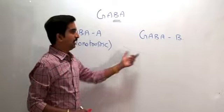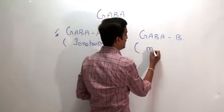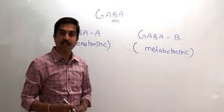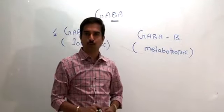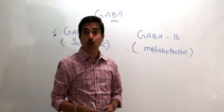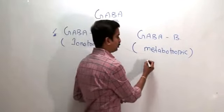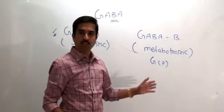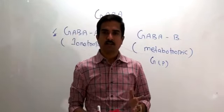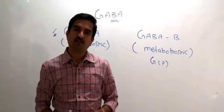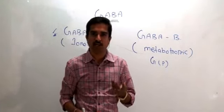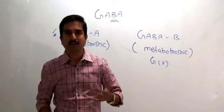Meanwhile, the GABA-B receptors are called metabotropic receptors, also known as G-protein coupled receptors. These are not connected with chloride channel opening. Instead, metabotropic receptors perform their biological action mediated by a secondary messenger system.